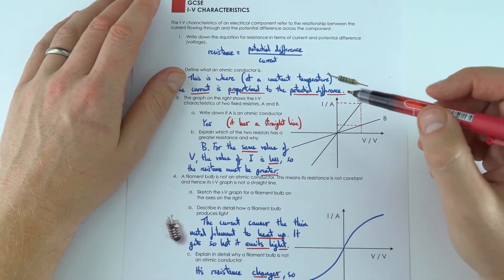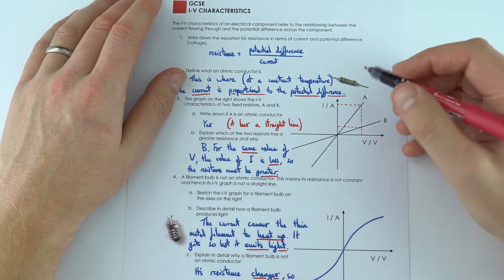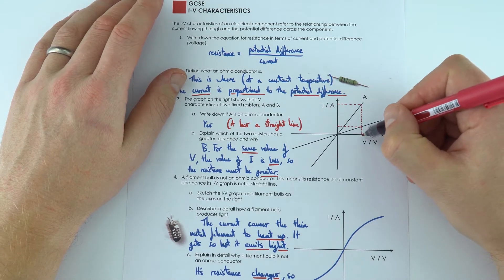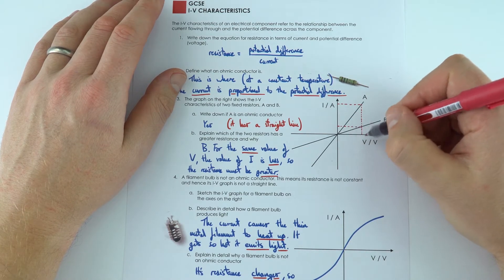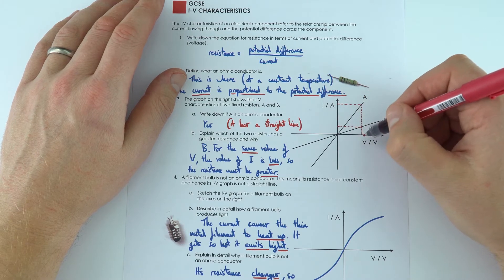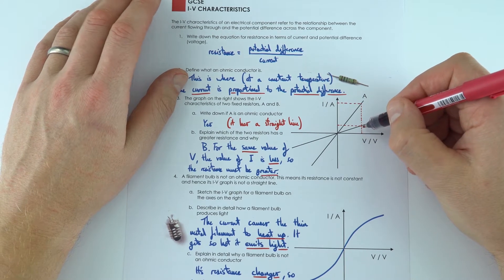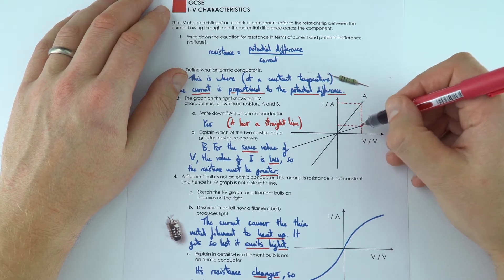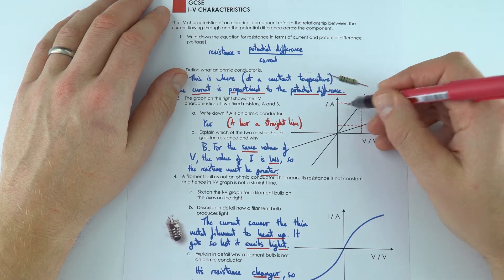But which of these has a greater resistance and why is that? Well what I did was I looked at a certain value of potential difference. Now we don't know the actual value because it's the shape that we're interested in. But at this value of potential difference, resistor B has a low current and resistor A has a high current.